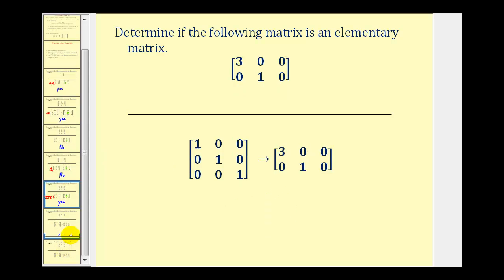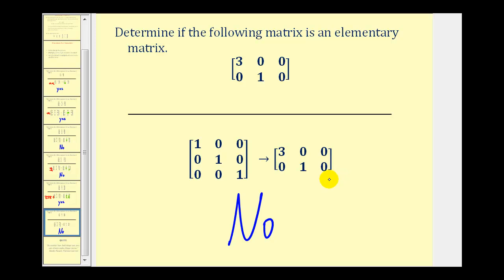For our last example, notice how we're given a two by three matrix. An elementary matrix must be a square matrix, so right away we know the answer is no — this is not an elementary matrix. There's no way we can start with a two by two or three by three identity matrix and perform one row operation to obtain a two by three matrix. It's just not possible. I hope you found these examples helpful.